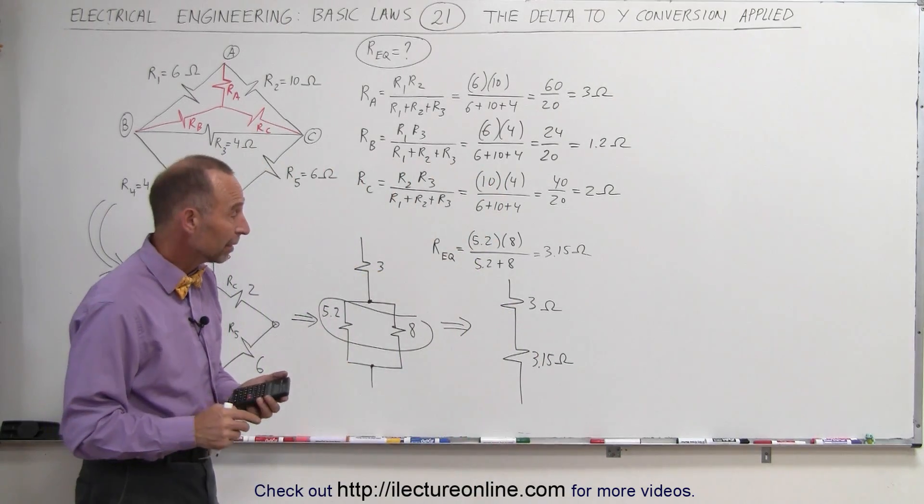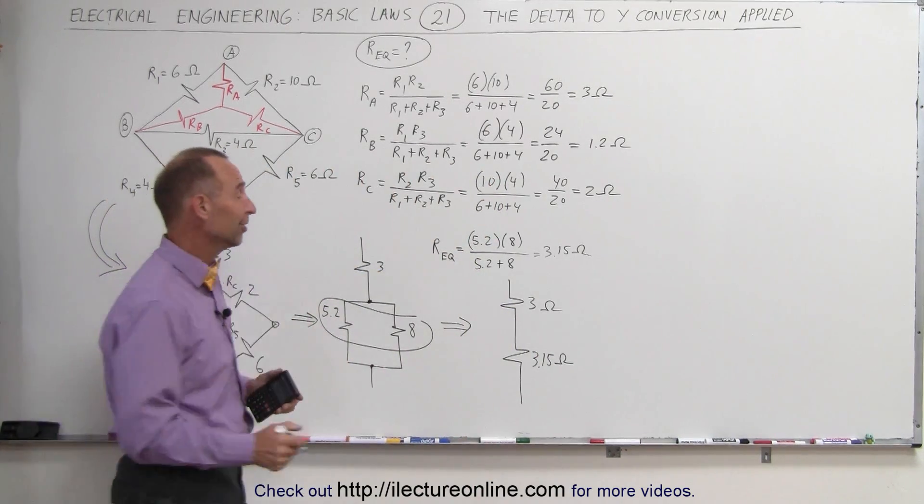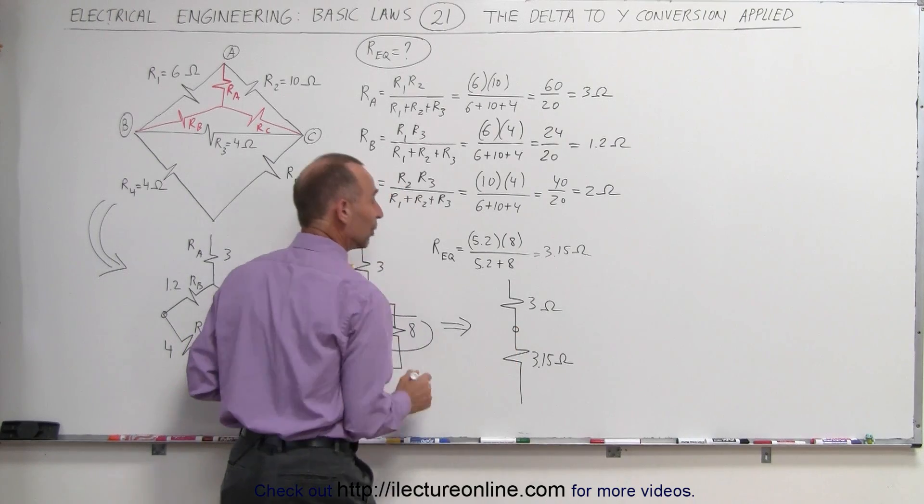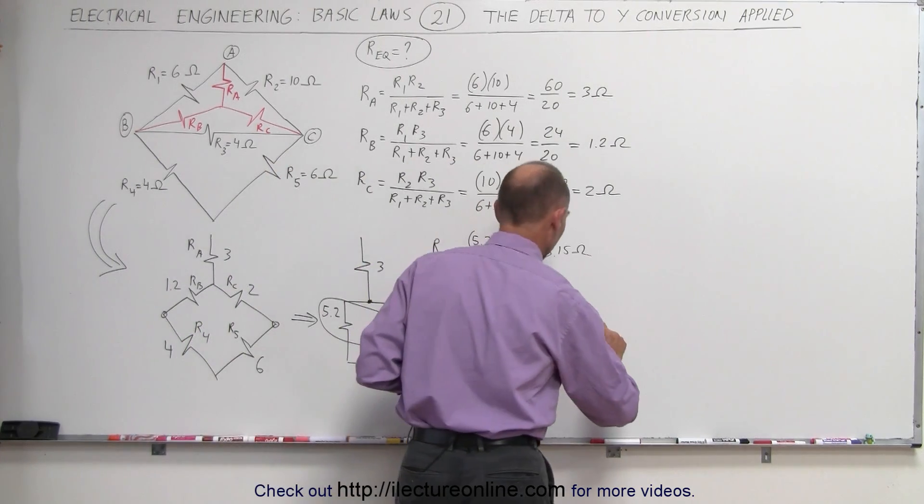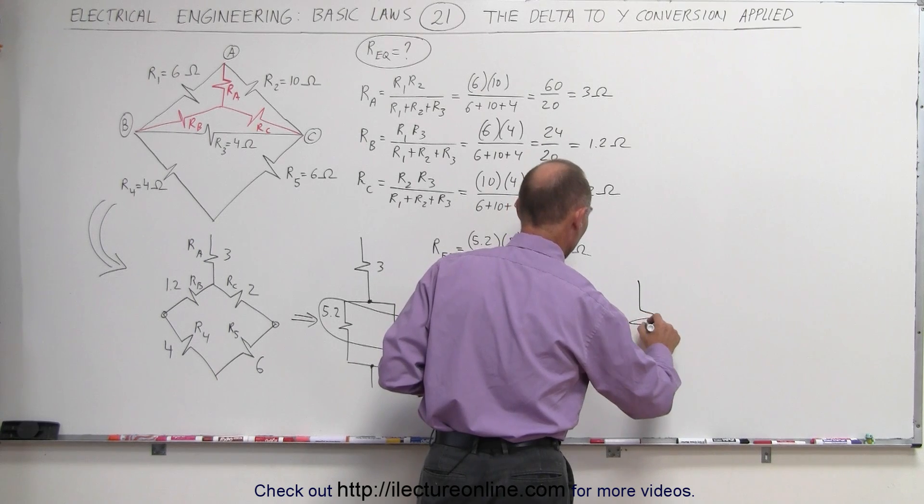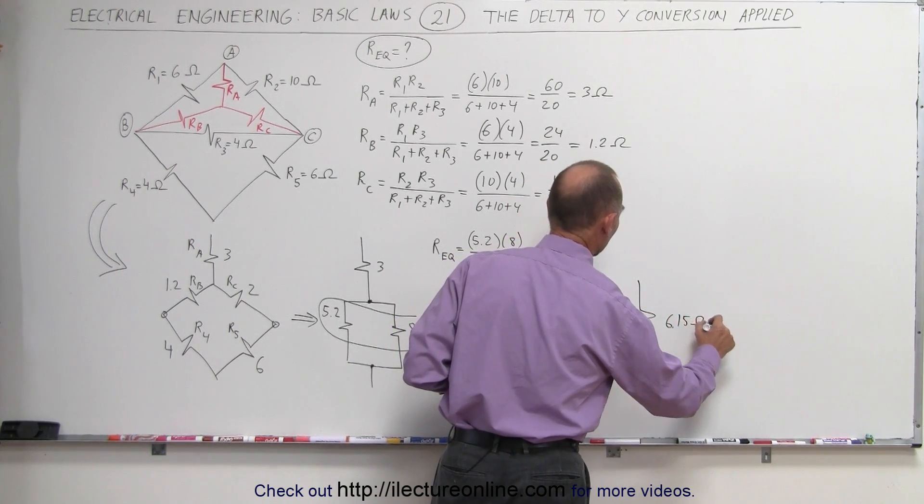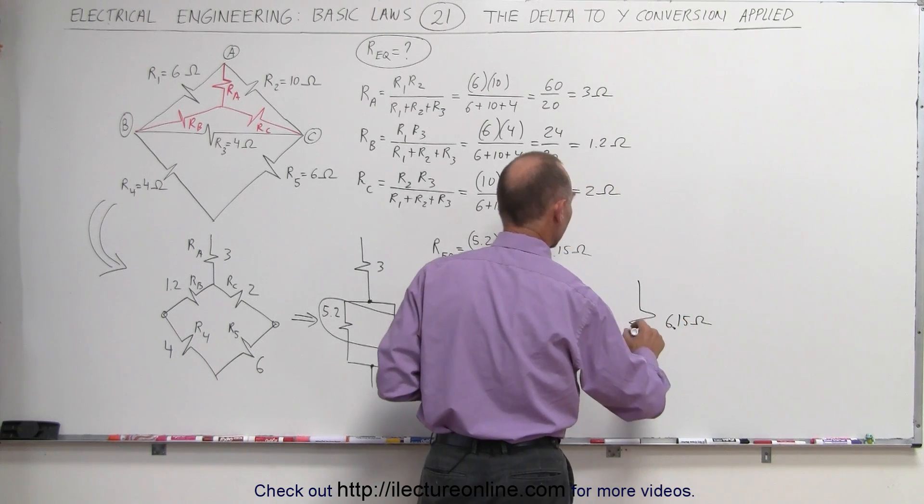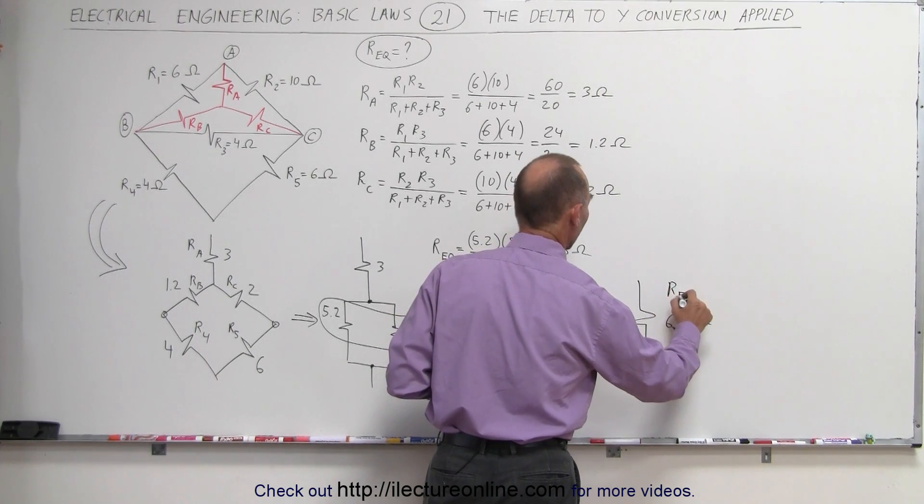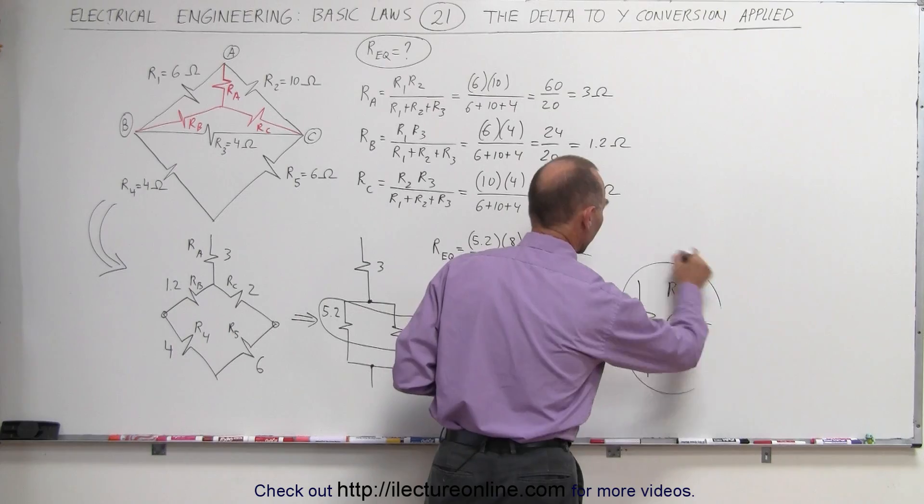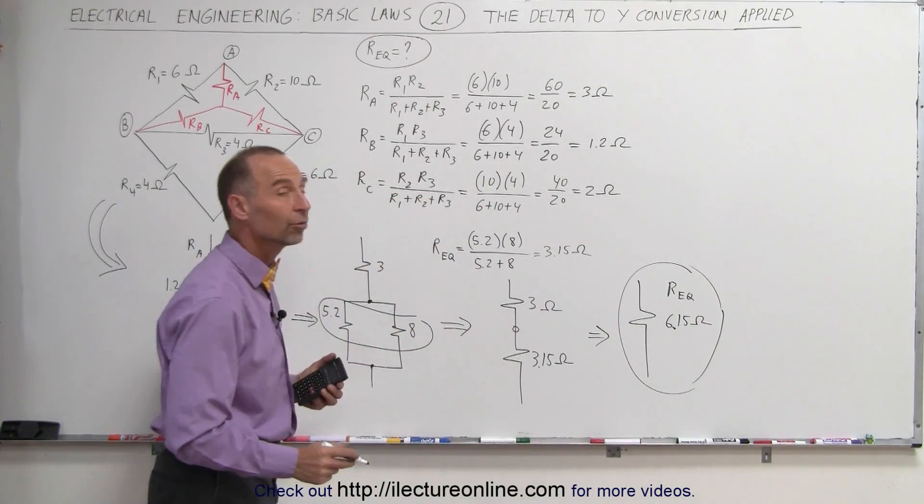Those two resistors are in series. They share a common node between them that's not shared with any other resistors. Therefore, we can simply add them. This then can be written as a single resistor of 6.15 ohms. And that is the R equivalent of the entire circuit. A single resistor equal to 6.15 ohms.